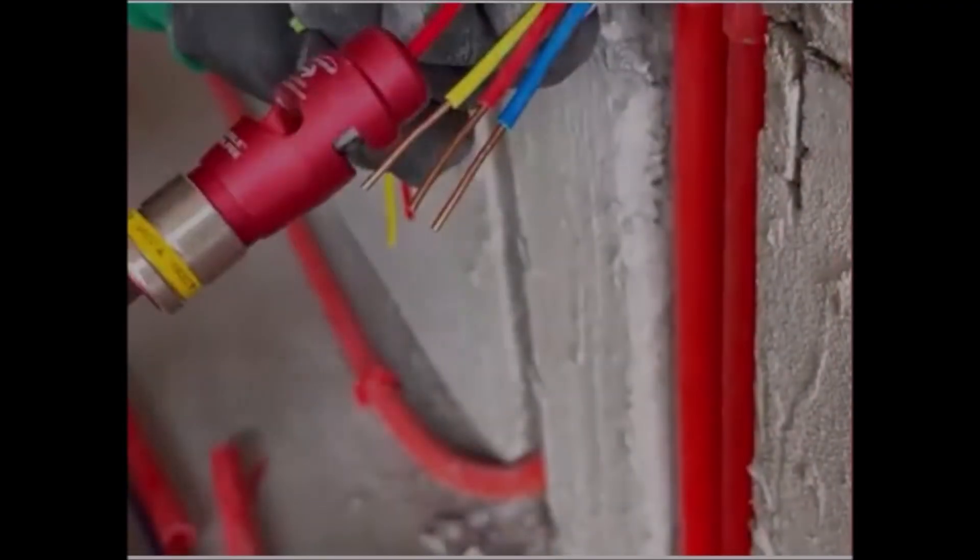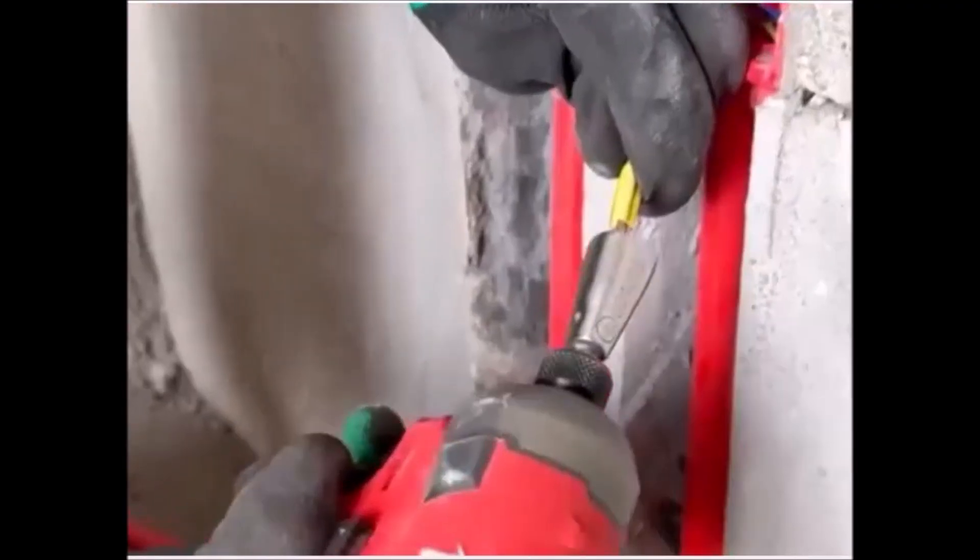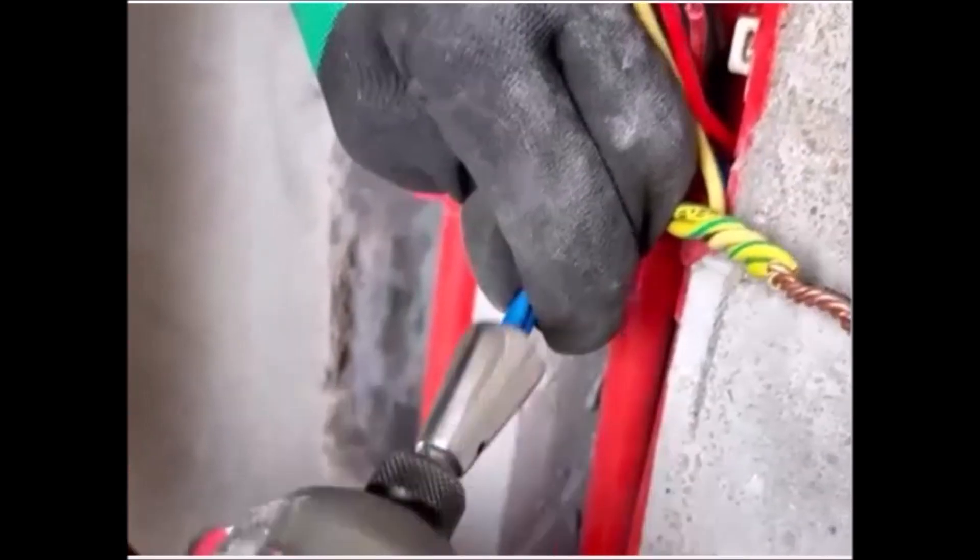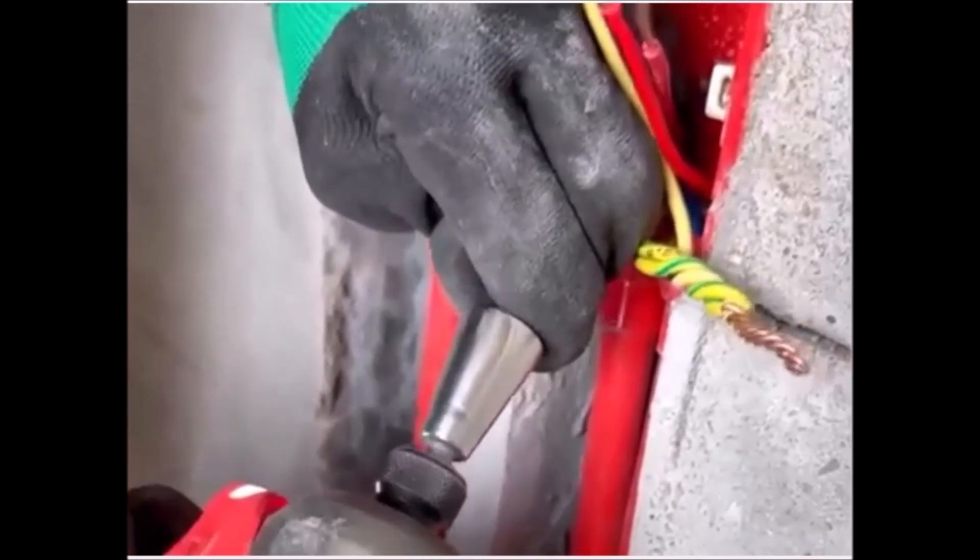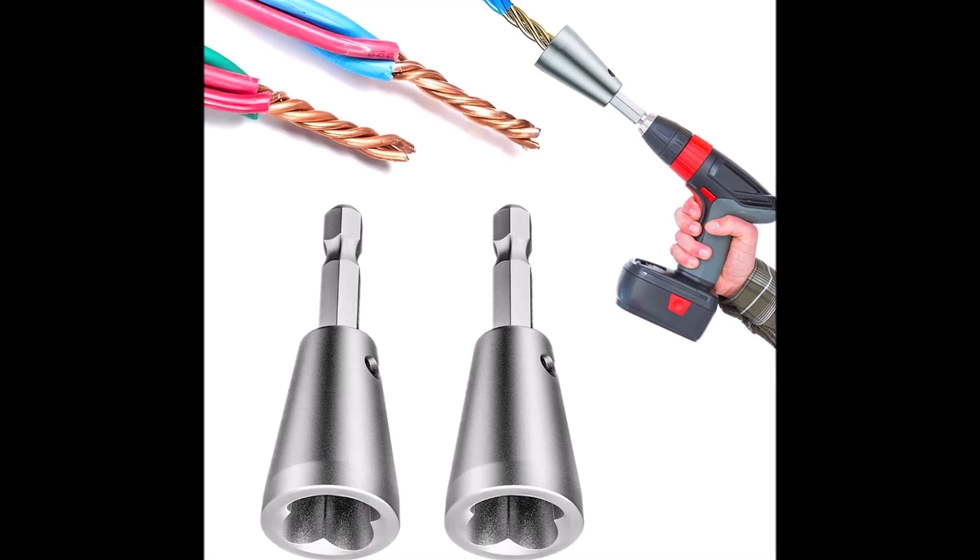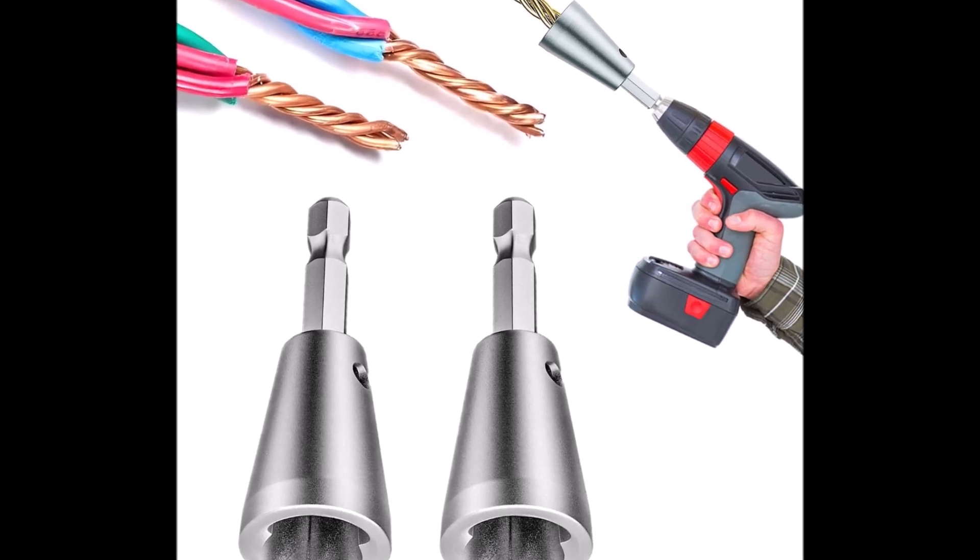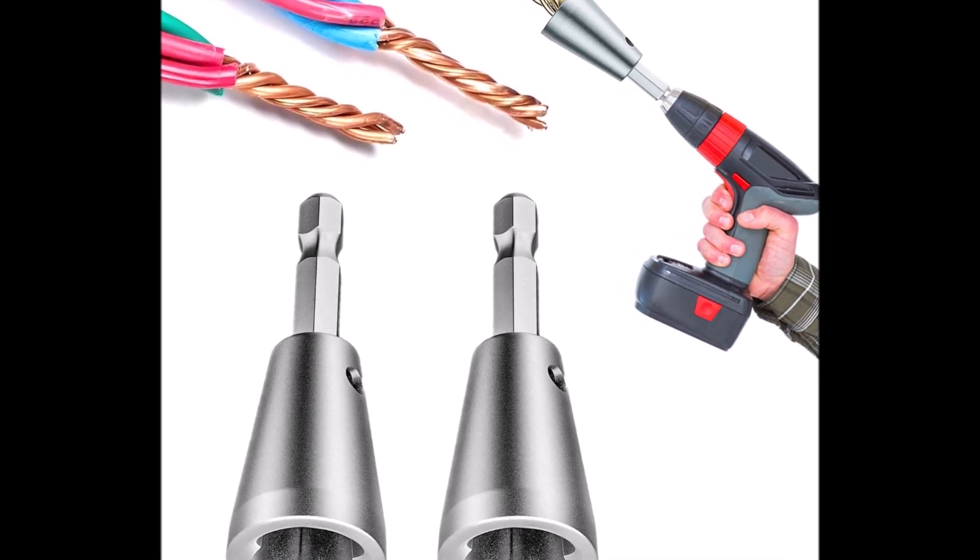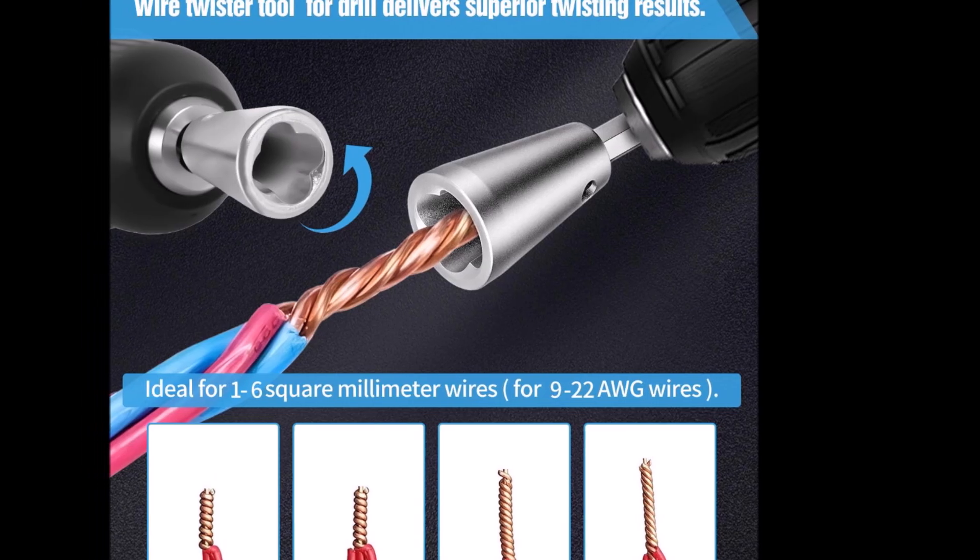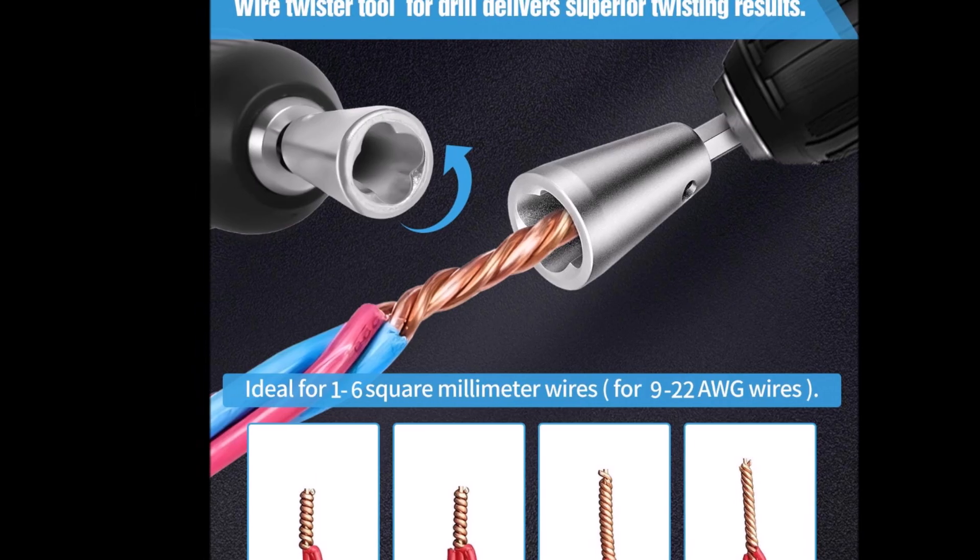Number two. The wire nut twister for drill offers a fast, consistent way to twist wires without straining fingers or wrists. Built from hardened 40CR steel with a rust-resistant finish, it's designed for durability and can handle over 20,000 connections. When paired with a standard 6mm hex drill or electric screwdriver, it speeds up wire bundling tasks, especially useful for 9 to 22 AWG wires.